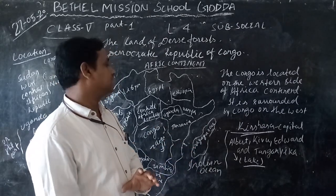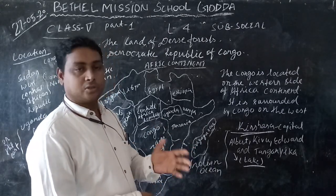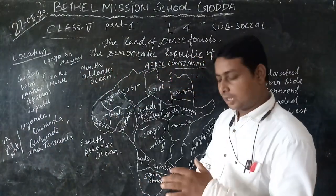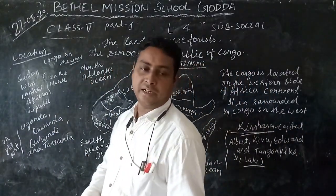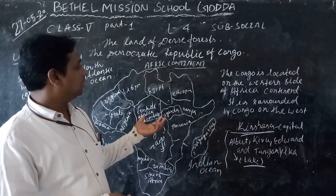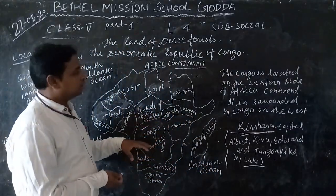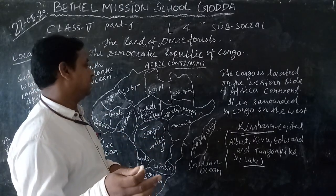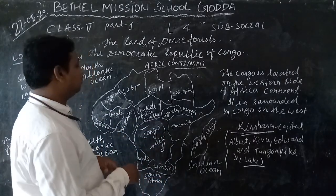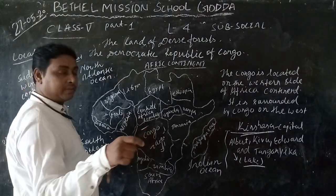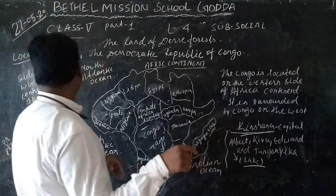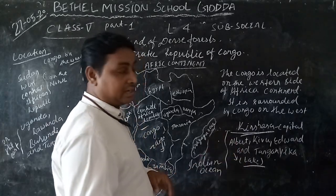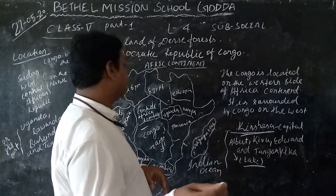Now, the Democratic Republic of Congo is located on the western side of Africa. It is surrounded by Congo on the west, and also by central Africa and Sudan.